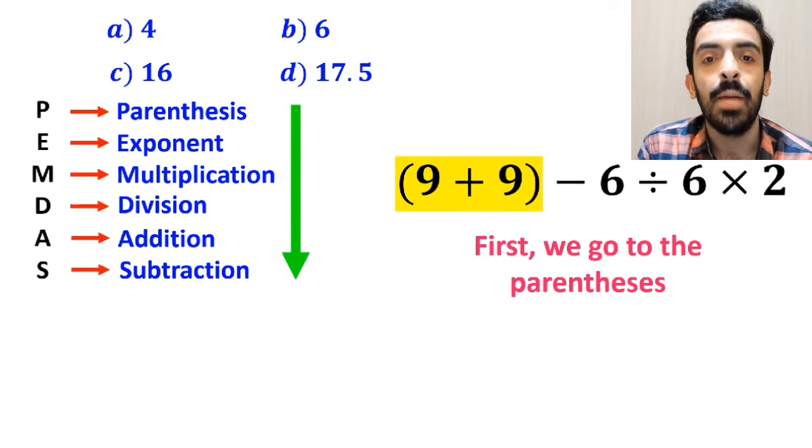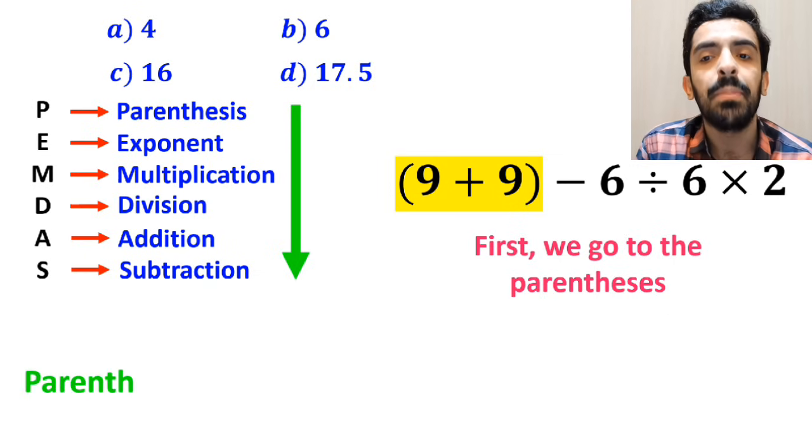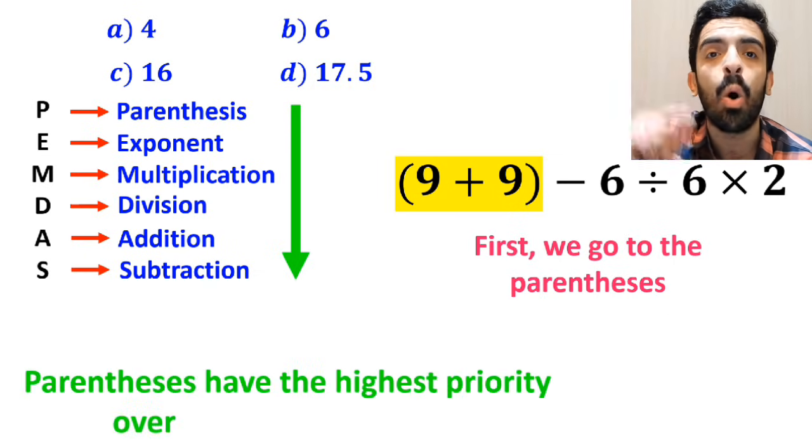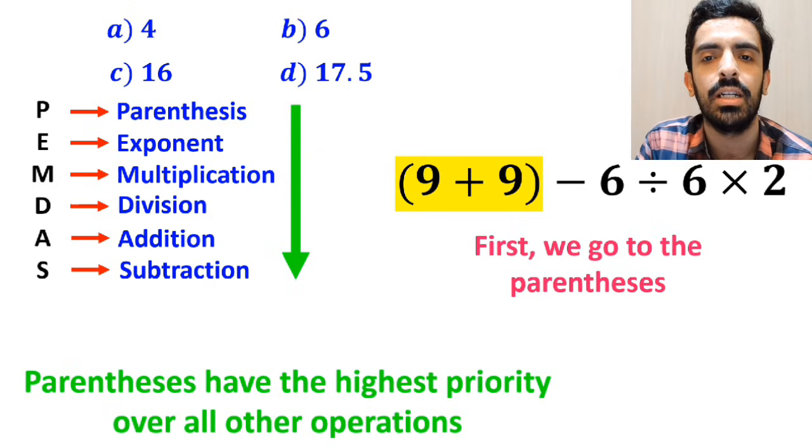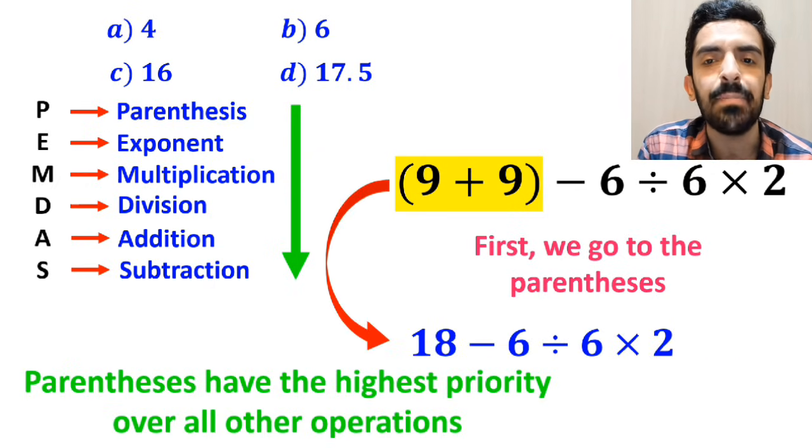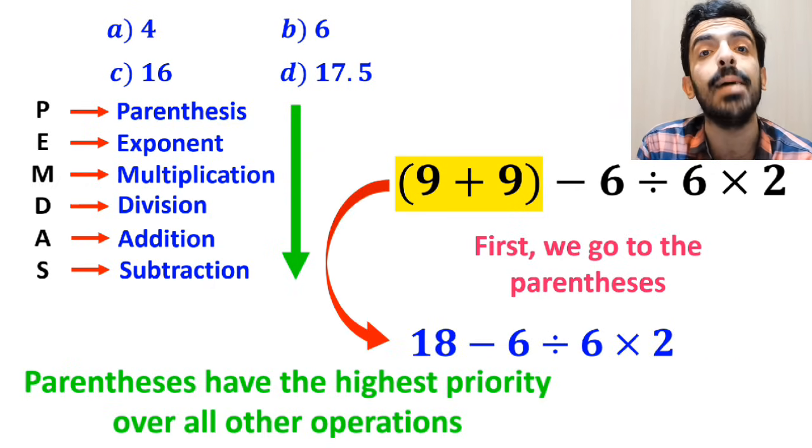Okay, first we go to the parenthesis, because according to the PEMDAS rule, parenthesis have the highest priority over all other operations. So, we can rewrite this expression as 18 minus 6 divided by 6 times 2.